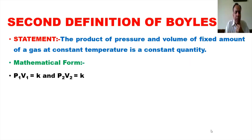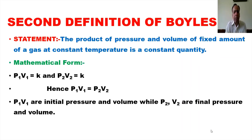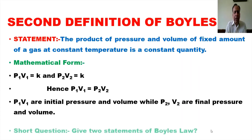If we put the initial pressure as P1 and initial volume as V1, then P1V1 is equal to K. The final volume is V2 and final pressure is P2, also equal to K. Hence we can say that P1V1 is equal to P2V2. We will prove it mathematically.